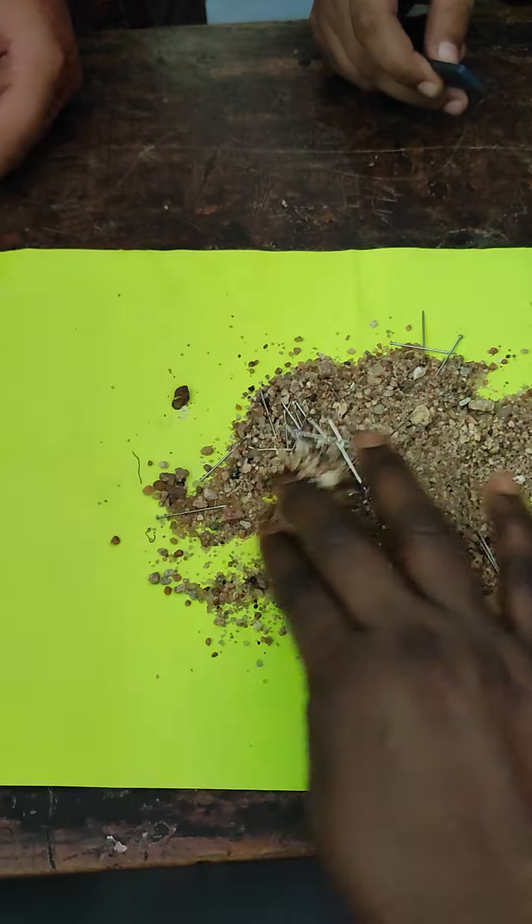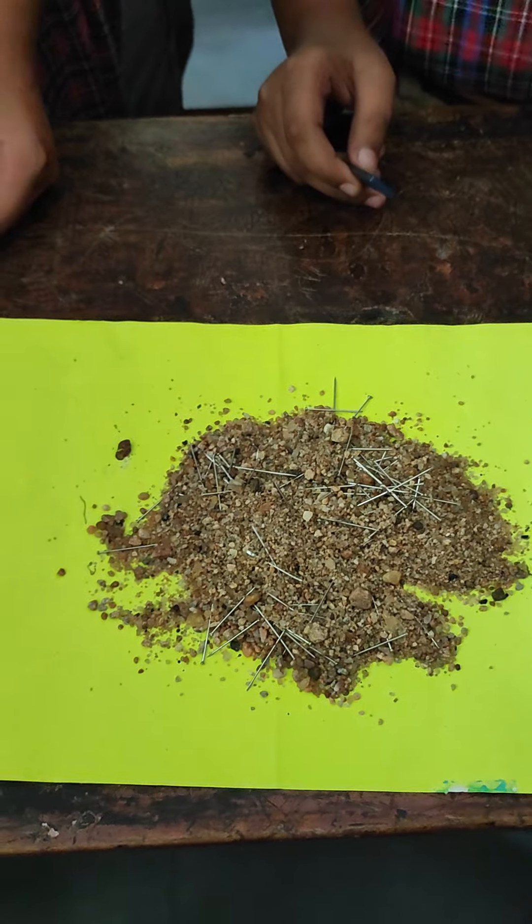So, we have mixed iron nails and sand. Now we have to separate them. What we will do?